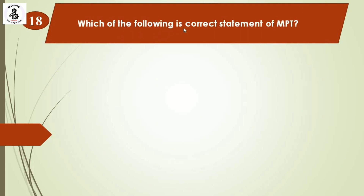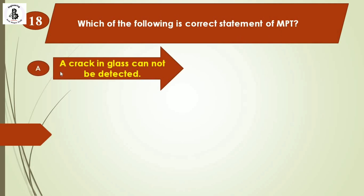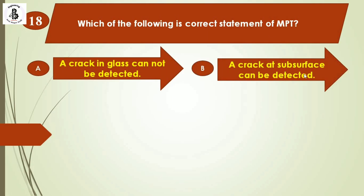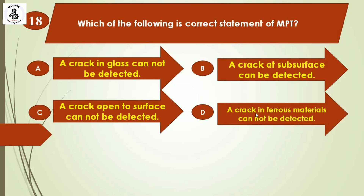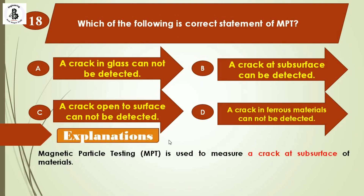Next question: Which of the following is a correct statement for MPT (magnetic particle testing)? Option A: a crack in glass cannot be detected. Option B: a crack at subsurface can be detected. Option C: a crack open to the surface cannot be detected. Option D: a crack in ferrous materials cannot be detected. Magnetic particle testing is generally used to detect cracks at the subsurface of materials. The right answer is option B — a crack at subsurface can be detected by MPT.